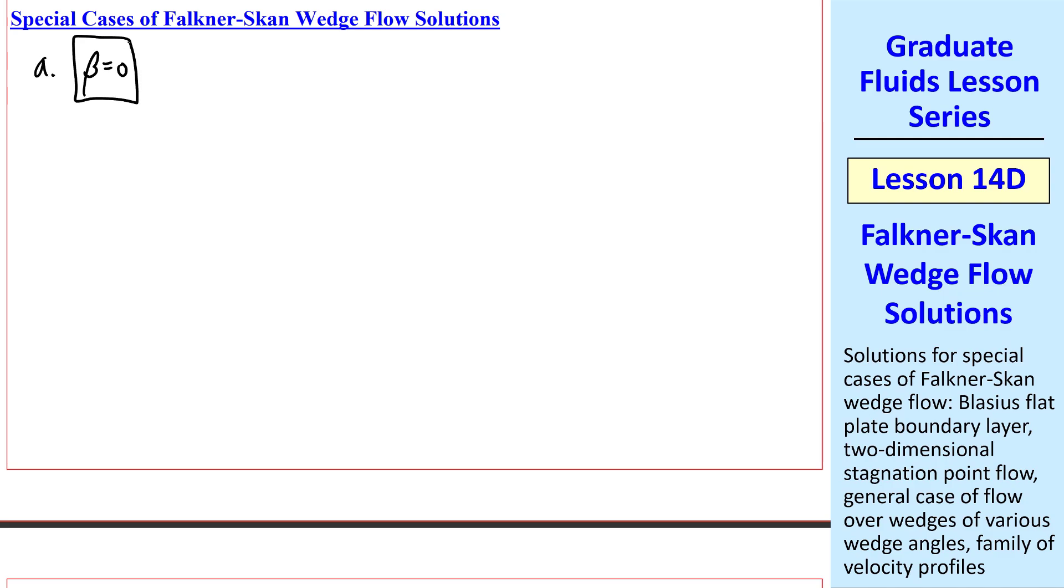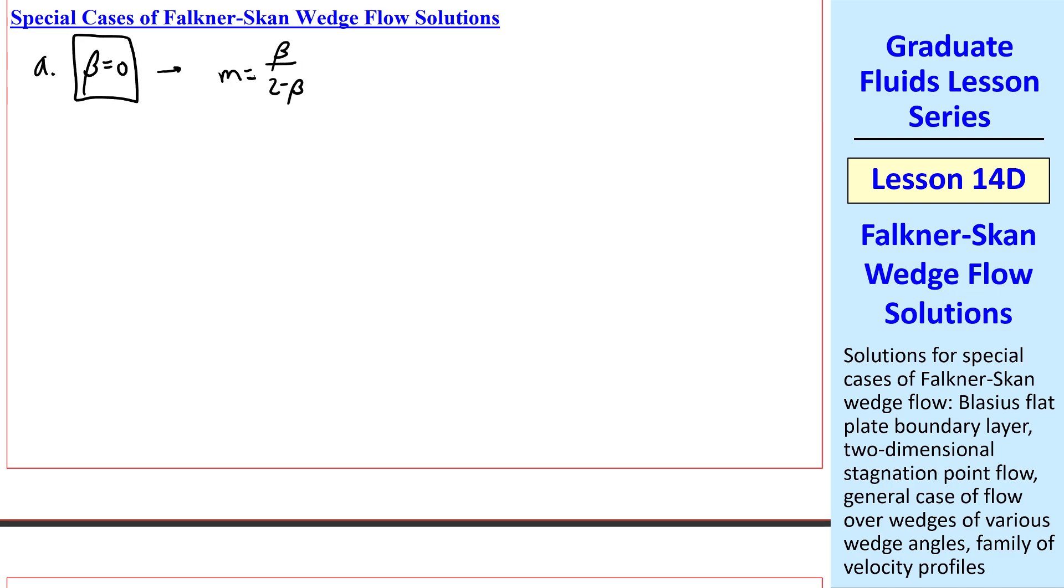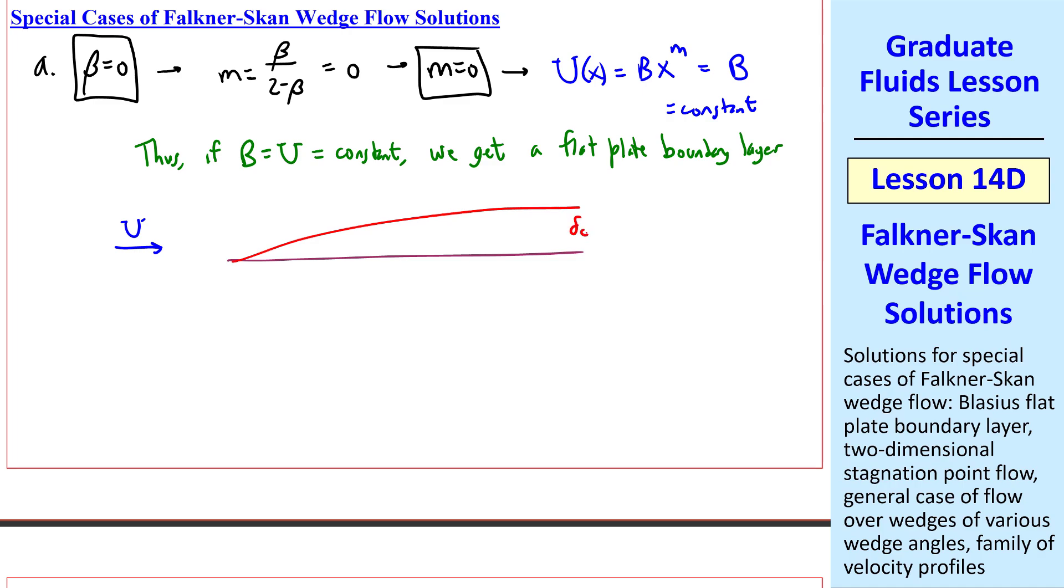The first case will be beta equals zero. Since m is beta over 2 minus beta, m is also zero. Therefore, u as a function of x is bx to the m, or just b since m is zero here, which is just a constant. So if we set b equal u equal constant, we get a flat plate boundary layer with some delta_c, a characteristic boundary layer thickness, growing with x. Also, the exponent b for delta_c is 1 minus m over 2, which is just a half here. And constant c is square root of nu times 2 minus beta over b, which here becomes square root of 2 nu over u.